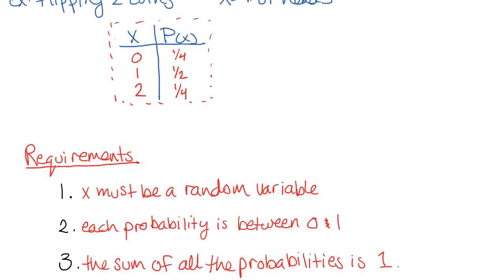When we're talking about random variables, there's three requirements that have to be met. First, whatever X is that we're dealing with, it has to be a random variable. So keep in mind your random variable has to be numerical. We couldn't have this random variable be, say, the outcome on the second flip being heads or tails. That's not a numerical value, so that wouldn't work.